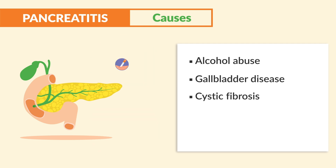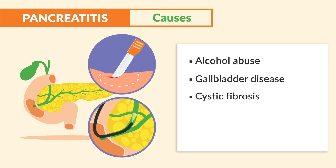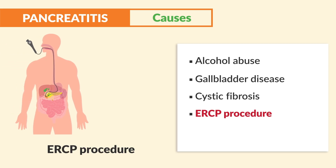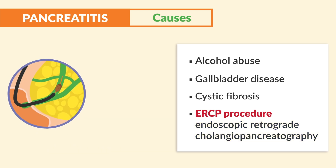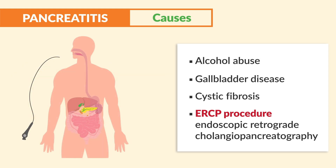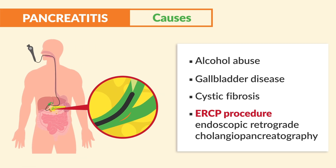Another cause is surgeries or diagnostic procedures that accidentally cause trauma and inflammation in this area. This is very common with an ERCP procedure — endoscopic retrograde cholangiopancreatography. Please write that down. ERCP is highly tested. Typically used to clear gallstones or diagnose problems in the bile duct, a scope is passed through the mouth, down through the small intestine, and through the bile and pancreatic duct. If the scope accidentally scratches the duct, it can cause major inflammation, blocking pancreatic enzymes and leading to pancreatitis.